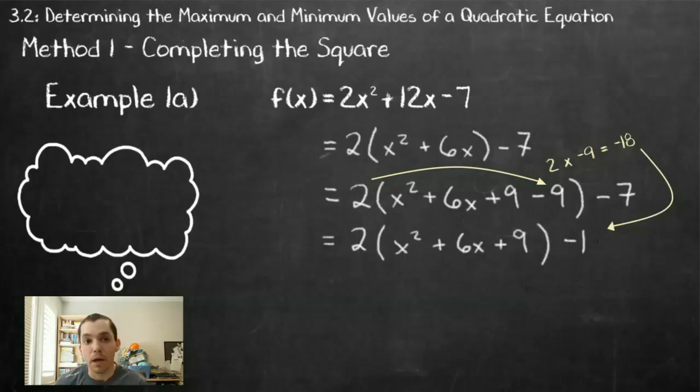My final step, I'm going to factor that trinomial, which will factor into x plus 3 squared, my perfect square, and then simplify the last two terms outside the bracket into minus 25.